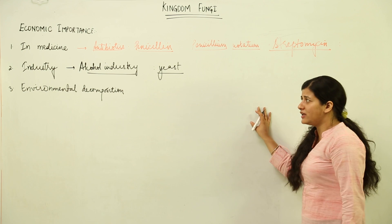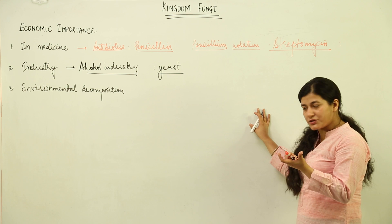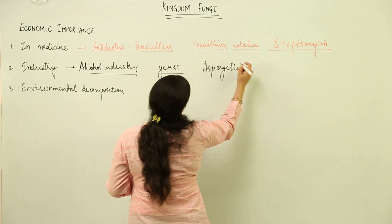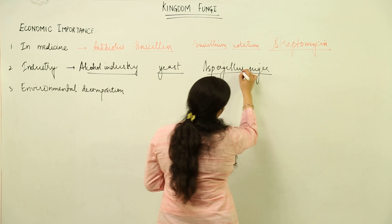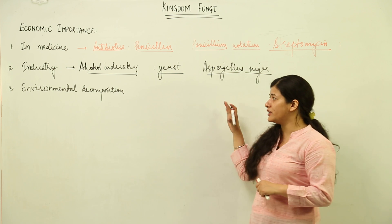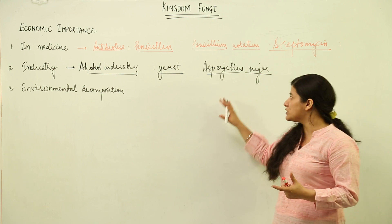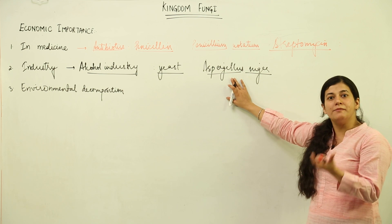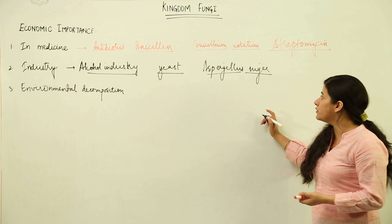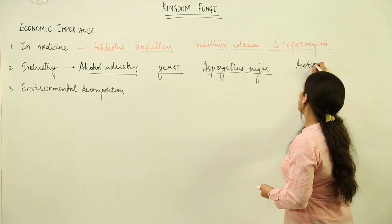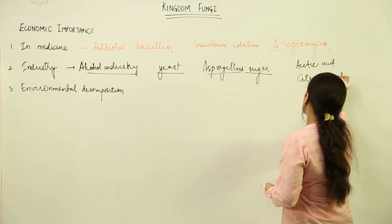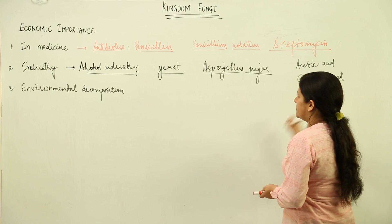Next, many chemicals are produced as a result of fungal intervention. For example, Aspergillus niger, a fungi, produces citric acid, acetic acid, and gallic acid, which are required by various industries. These acids are formed as a result of fungal metabolic activity, and fungal metabolism gives rise to all these chemicals which we utilize for our own good.